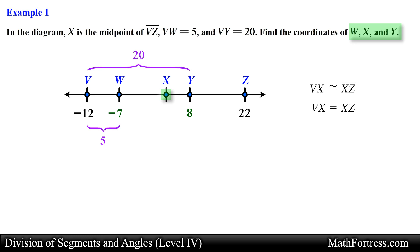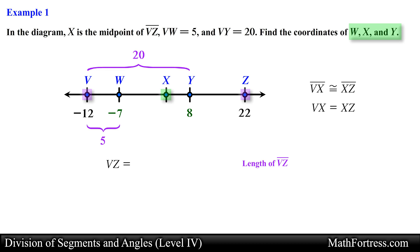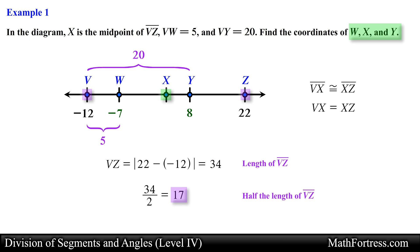The coordinate of point X can be determined by finding the length of segment VZ and taking half this length. To find the length of segment VZ we compute the absolute difference of the endpoints' coordinates, obtaining 34. Taking half of 34 gives us 17, and moving 17 units to the right of point V or 17 units to the left of point Z gives us 5 for the coordinate of point X. This is our final answer.